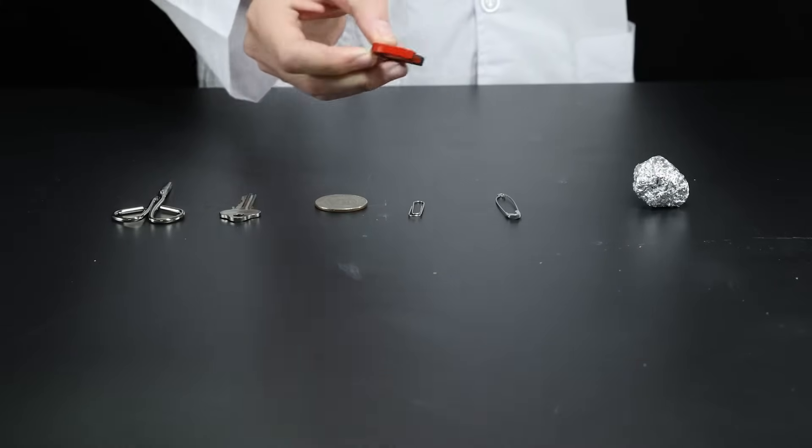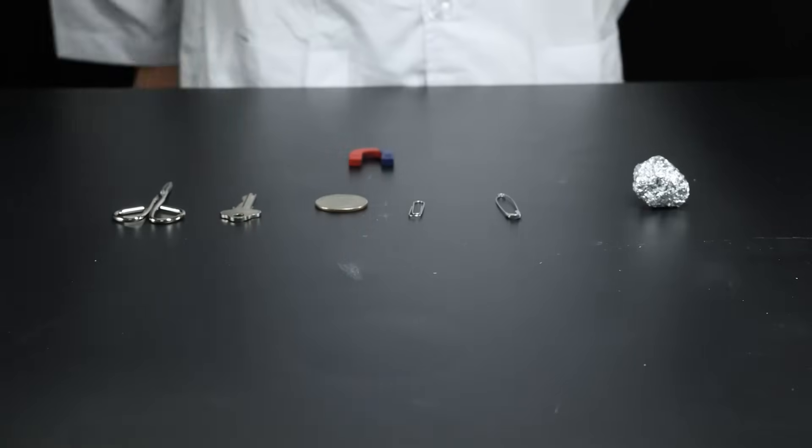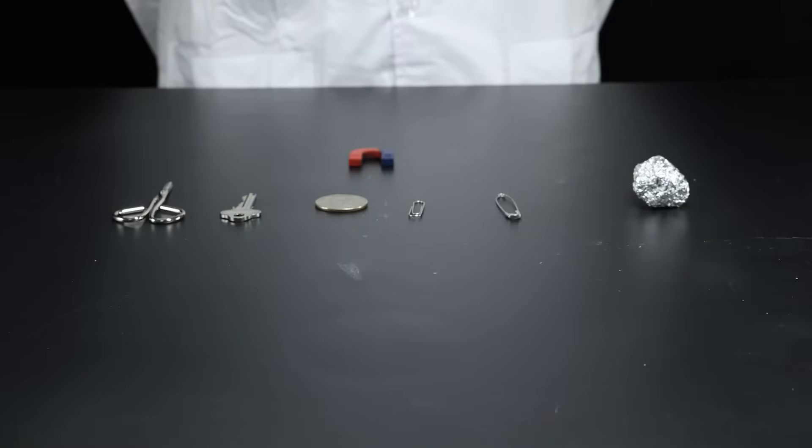As we can see from this simple demonstration, some metals are magnetic and others are non-magnetic. Generally, objects that contain the metals iron, nickel, and cobalt are magnetic.